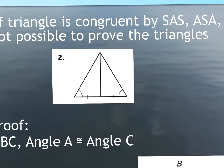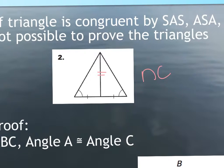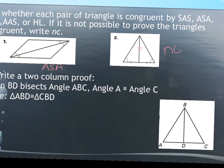Okay, two — are these congruent? If you were to mark that reflexive side, because that's the only thing that's there that's not already marked — we can't use that acronym. An angle, the non-included angle, and then two sides — makes a bad word. Can't use it. It doesn't work, but it also makes a bad word.